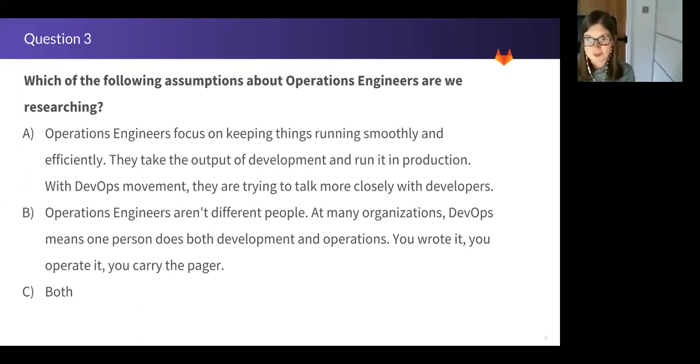Question number three. Another new OKR for the UX team is to establish operations engineers as a first class citizen within GitLab. So what assumptions do we already have about operations engineers? What are we hoping to prove or disprove?